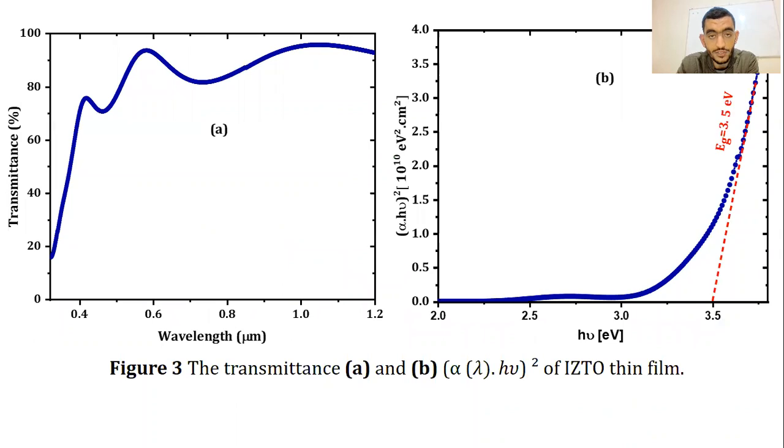The average transmittance of indium zinc tin oxide thin film in visible wavelength was over 87% with 3.5-volt optical bandgap as presented in figures 3A and B.